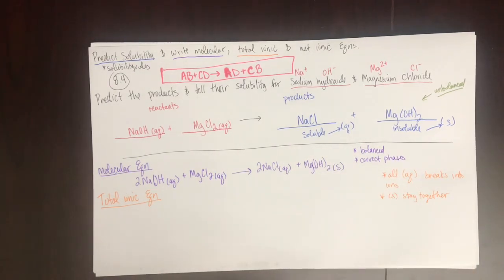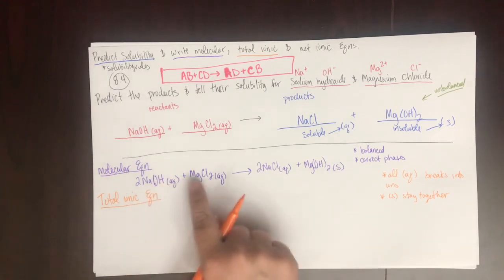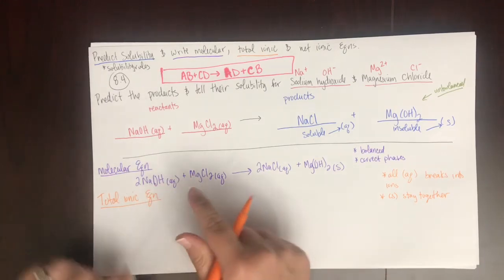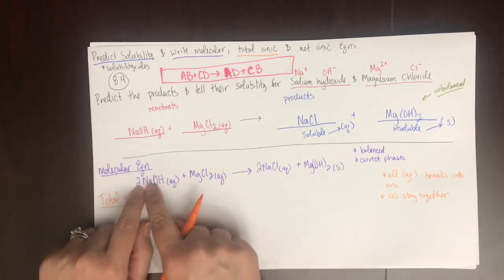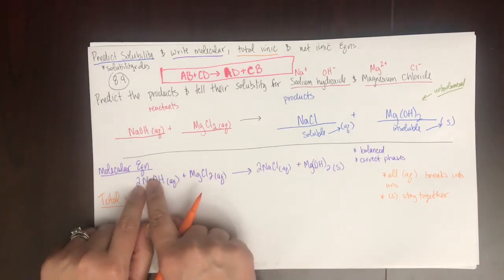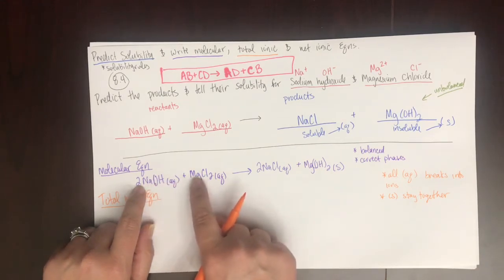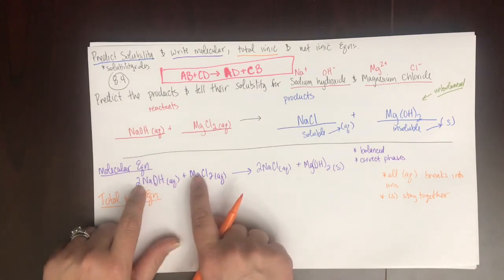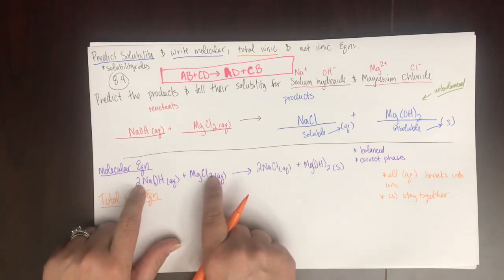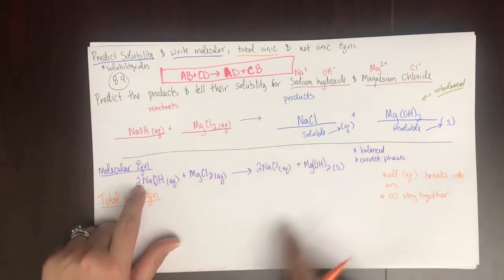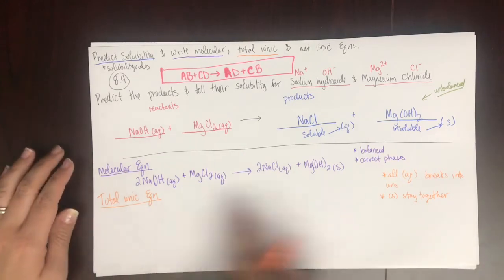So I'm going to write every single ion: two sodium ions, two hydroxide ions, one magnesium ion, two chloride ions, and so on — I'll do this for the whole equation.